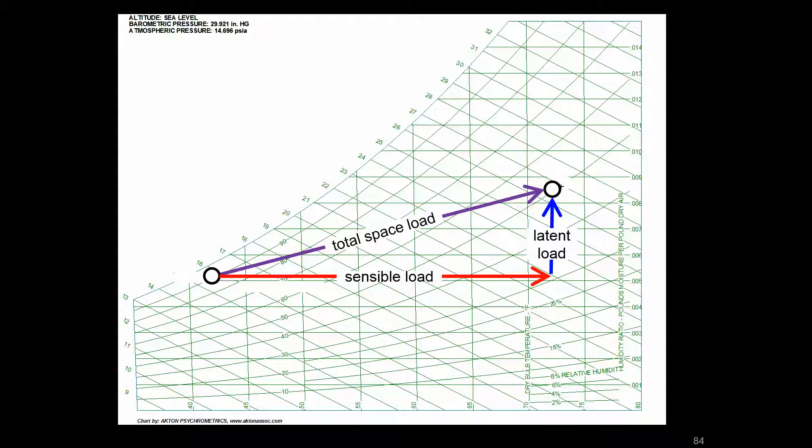Now that we're hopefully more comfortable with the representations shown on the psych chart with these loads and load components, we're going to look at some equations that are pretty standard in psychrometrics that are used for these different sensible, latent, and total pieces.